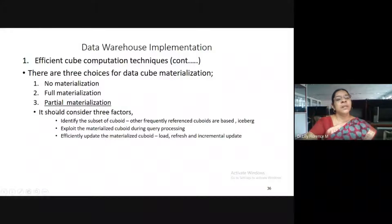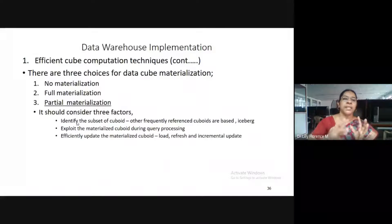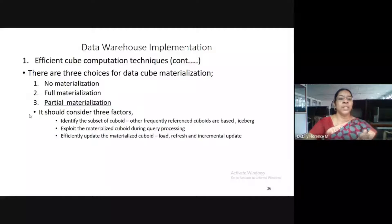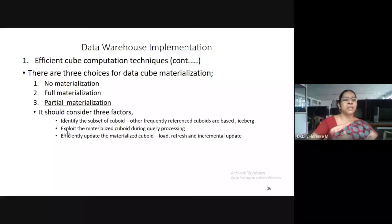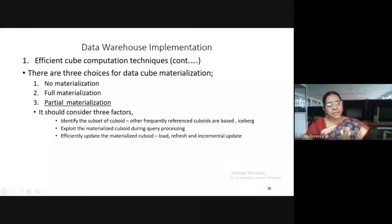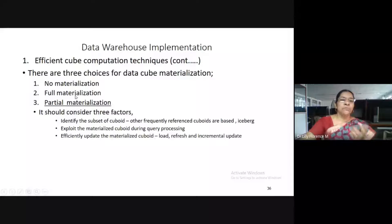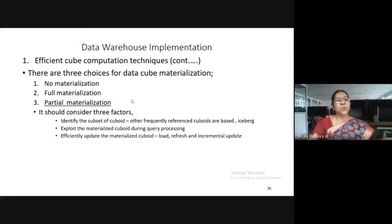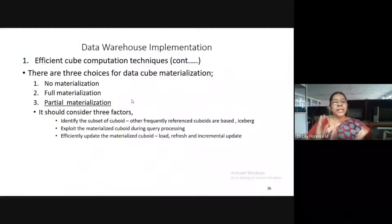The third choice is partial materialization. Here we consider only the cuboids that are really relevant to query processing — that is partial materialization. We take a set of cuboids, and there are some factors to consider. One factor is how to identify the subset of cuboids which are really relevant to query processing, unlike full materialization where all cuboids are used.